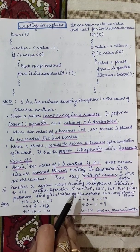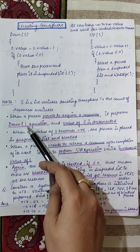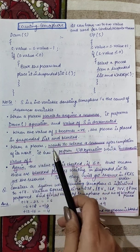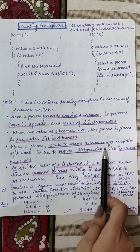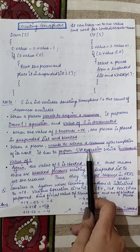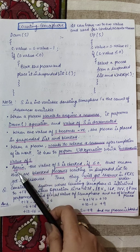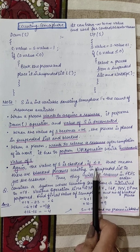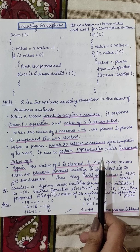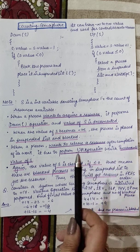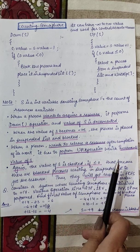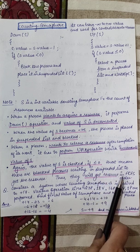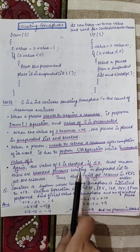Summary: whenever a process wants to acquire a resource, it performs the down operation — value of S को decrement किया जाता है. When the value of S becomes negative, the process को suspended list में रख दिया जाता है, वो block हो जाता है. When a process wants to release a resource, it performs the up operation (signal operation) — S की value increment होगी. अब check करेंगे कि S की value less than or equal to zero है या नहीं — अगर negative में है तो कुछ processes suspended list में wait कर रहे हैं, और suspended list से process को wake up किया जाएगा.